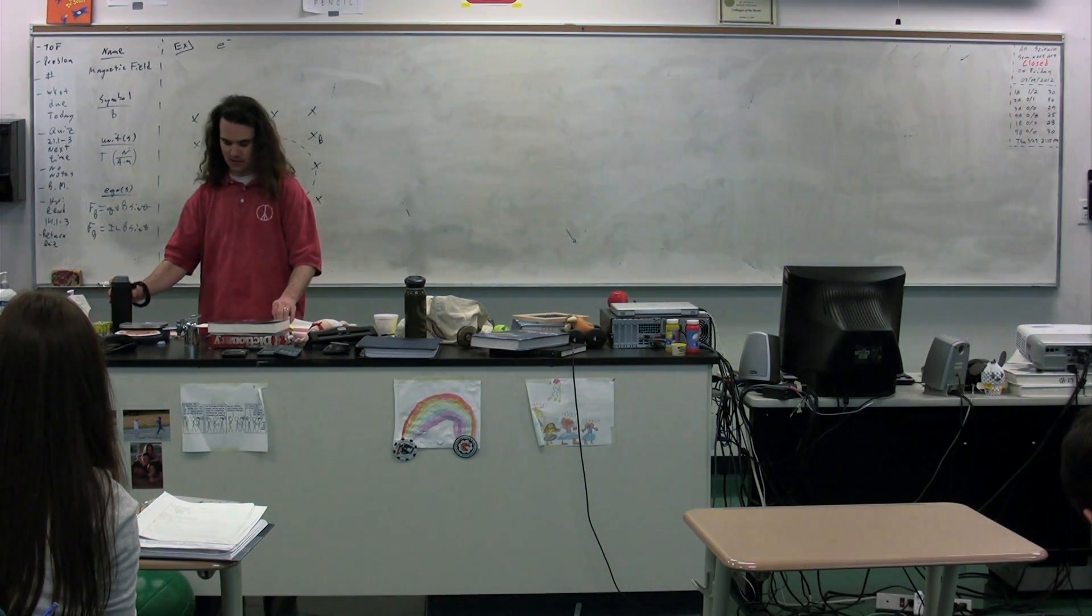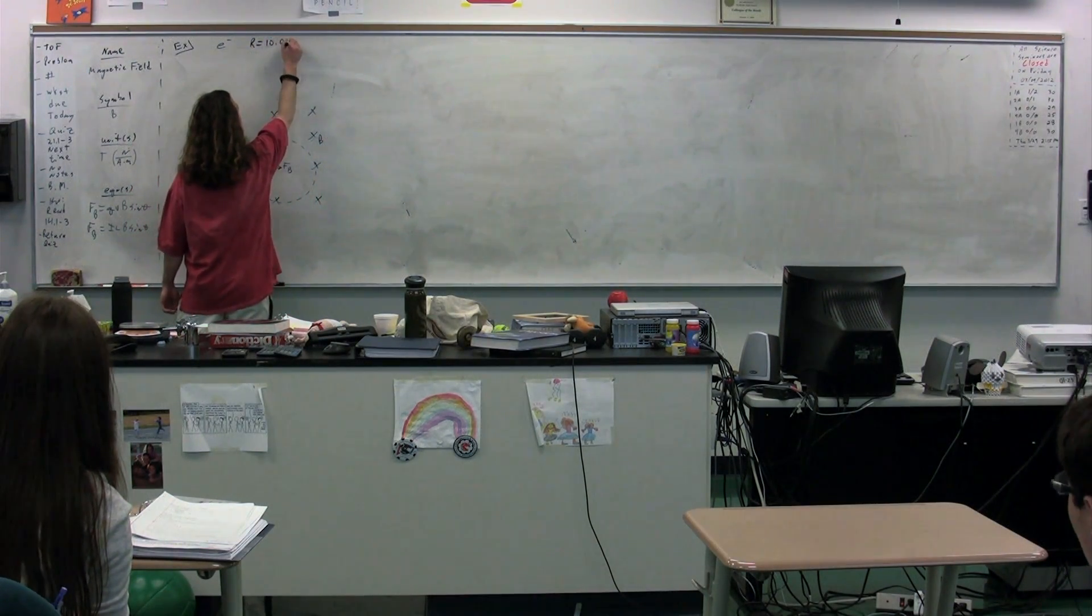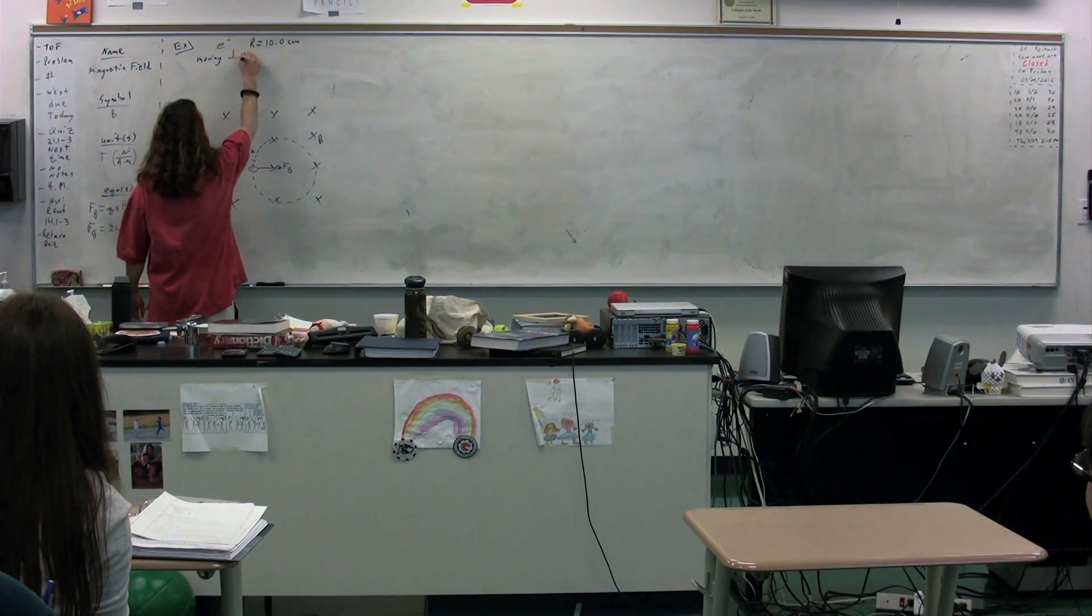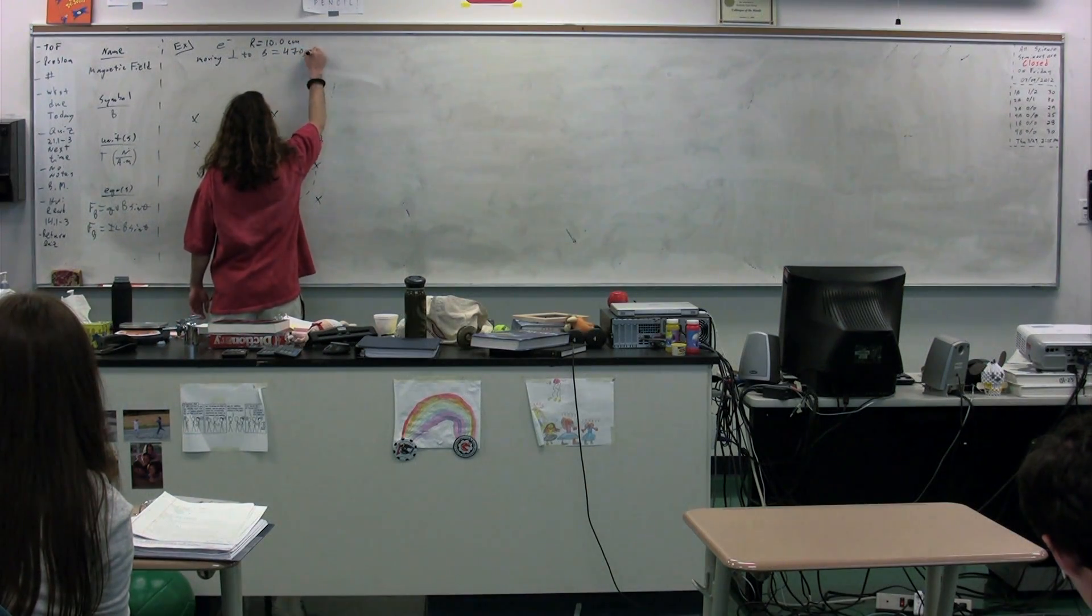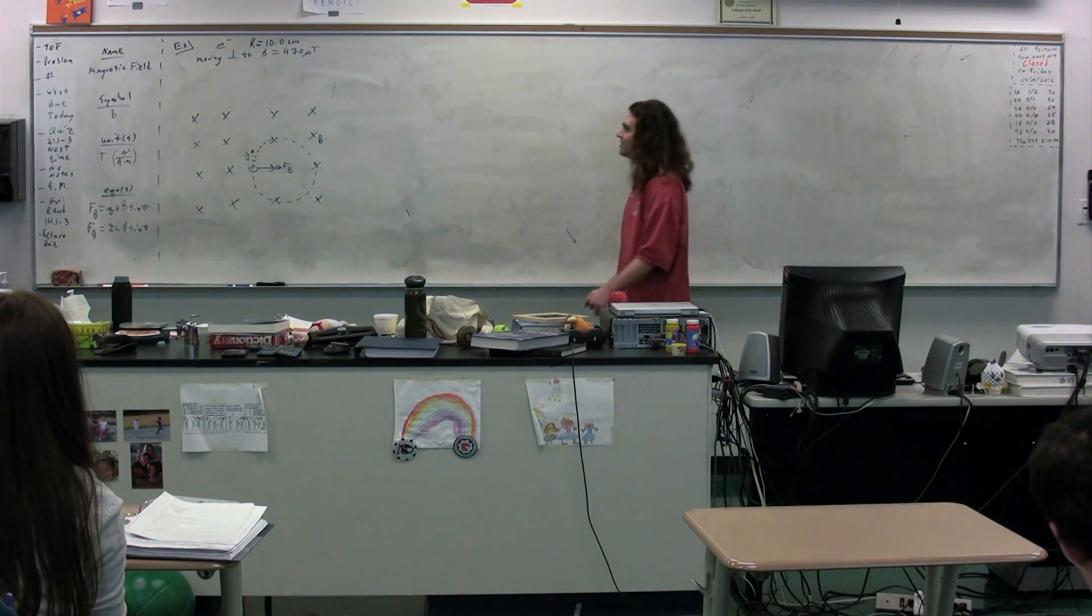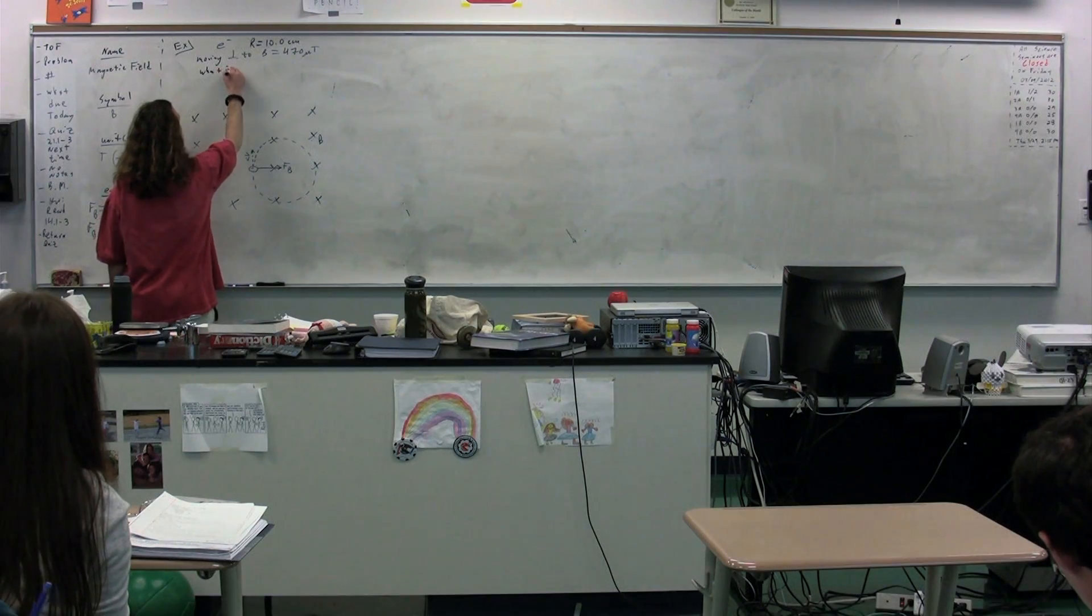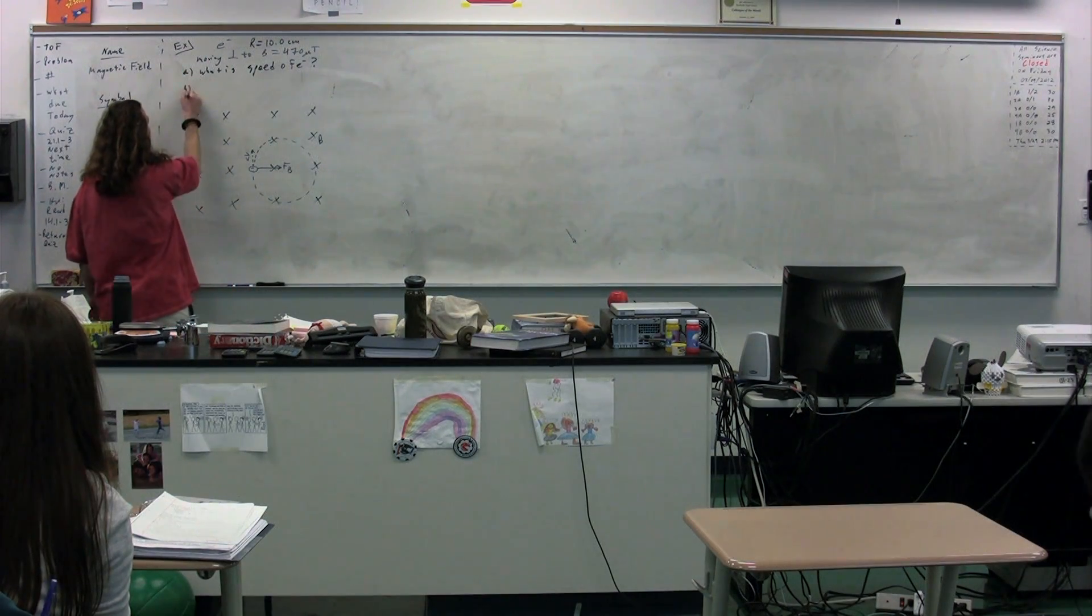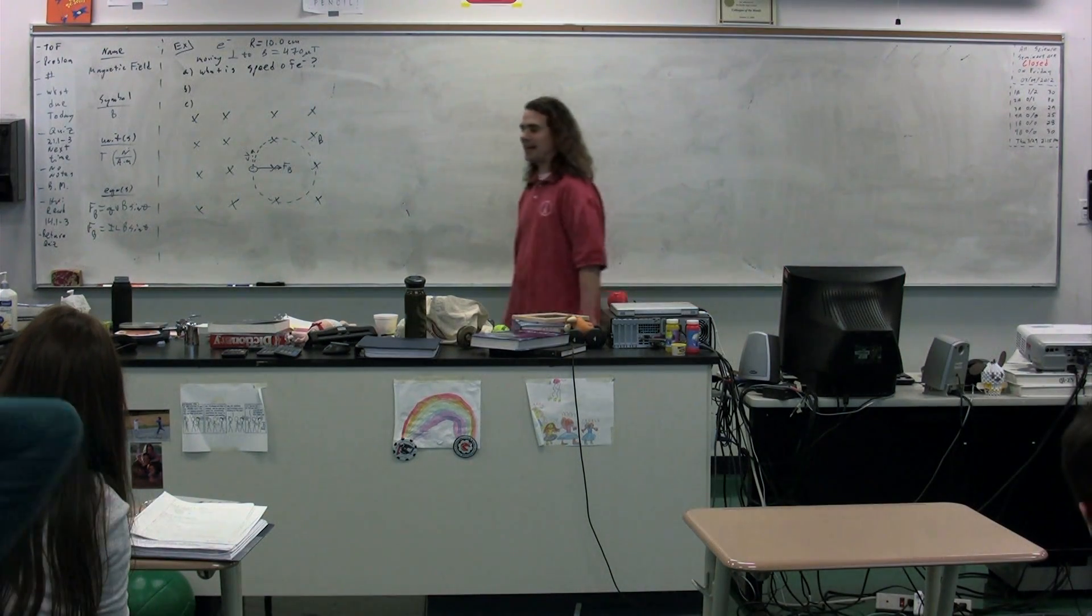Alright. Some information that we know, and we're going to find various other things from it. We know that the radius of the circle through which this object is moving, this electron is moving, is 10.0 centimeters. We know it's moving perpendicular to a magnetic field, which has a value of 470. 470 what, Travis? 470 micro teslas. Micro teslas. We are going to figure out the speed of the electron. That's going to be part A. We're going to do parts B and C.